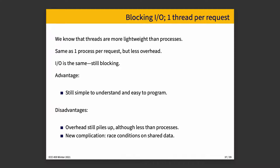Moving to one thread per request works better because it's essentially the same as one process, but with less overhead. It is still simple to understand and relatively easy to program. However, it does have a couple of potential problems: there's still overhead, although not as much as processes, and we face the possibility of race conditions on shared data and coordinating all those different threads. I/O is still blocking, but it's a reasonable approach.